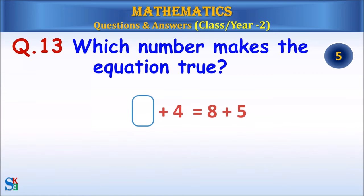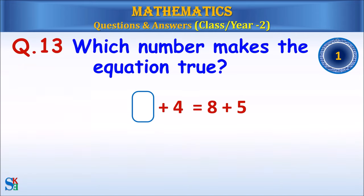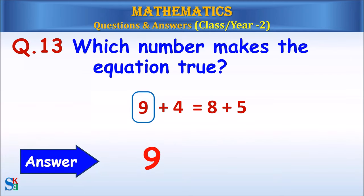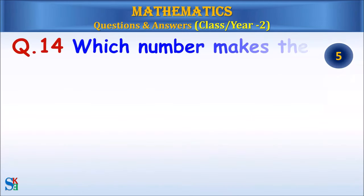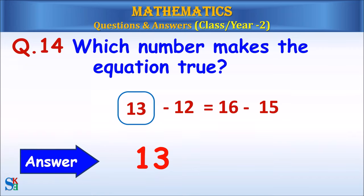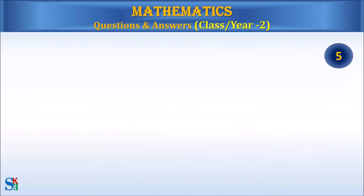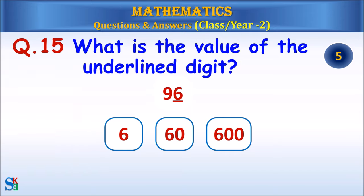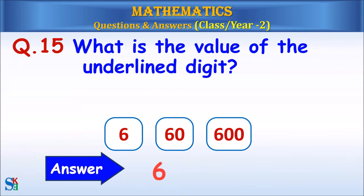Question 12: Add 44 to 58. What do you get? Answer: 102. Question 13: Which number makes the equation true? Answer: 9. Question 14: Which number makes the equation true? Answer: 13. Question 15: What is the value of the underlined digit? Answer: 6.